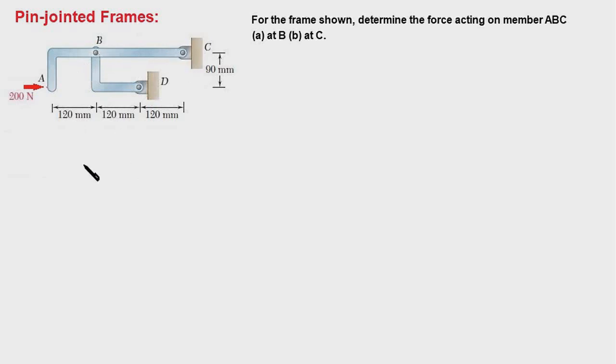I'm going to skip the first step of drawing the FBD of the entire frame and determining the reaction forces at the supports, and I'll tell you the logic behind this in a moment. Instead of analyzing the entire frame, I would dismember the entire frame and draw FBD of the two members, BD and ABC.